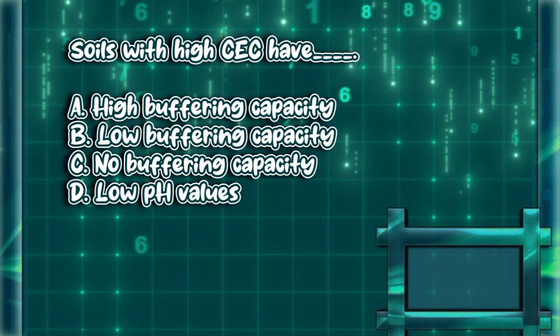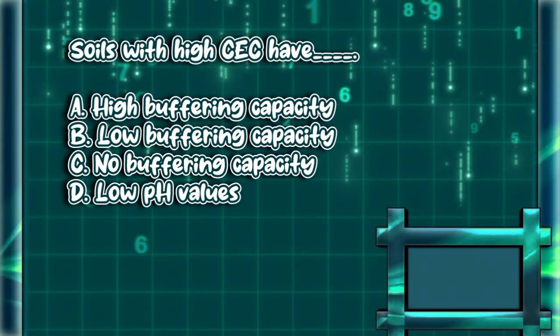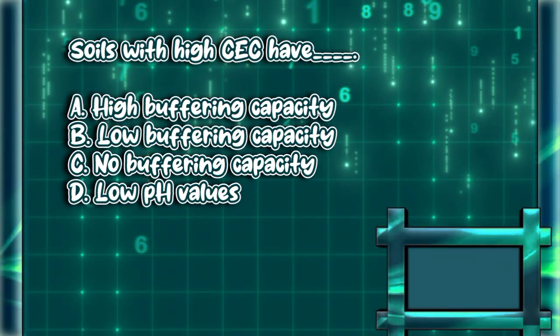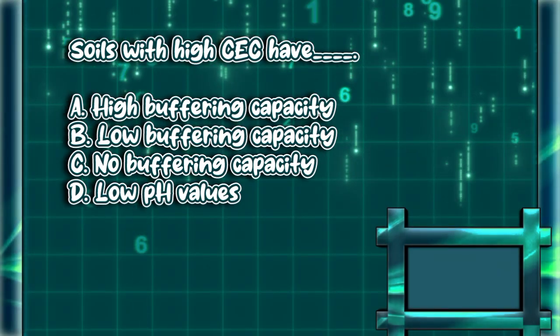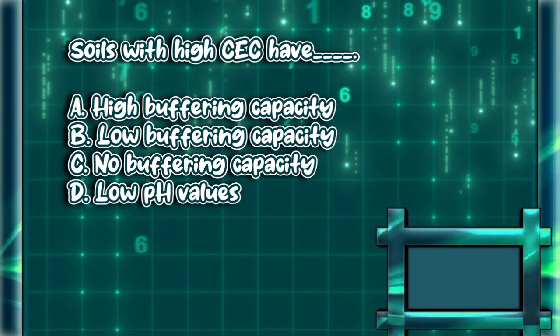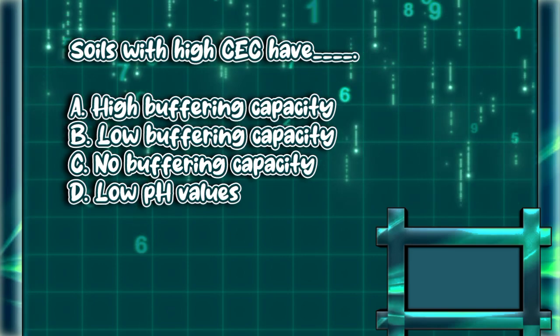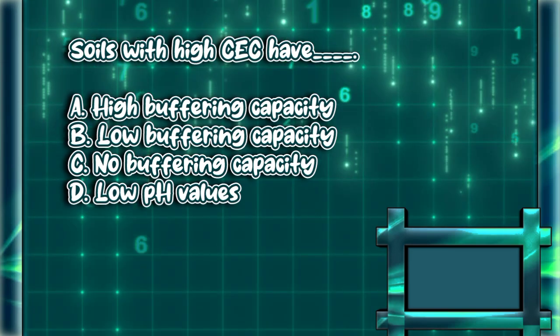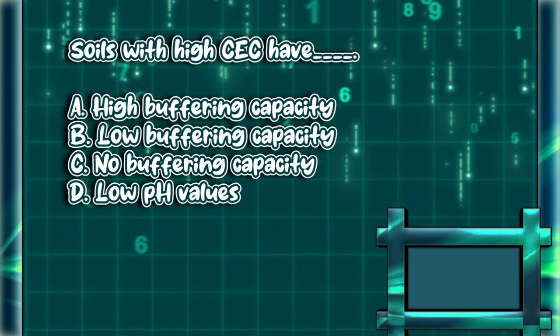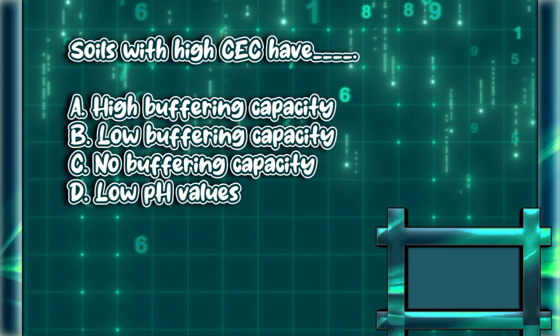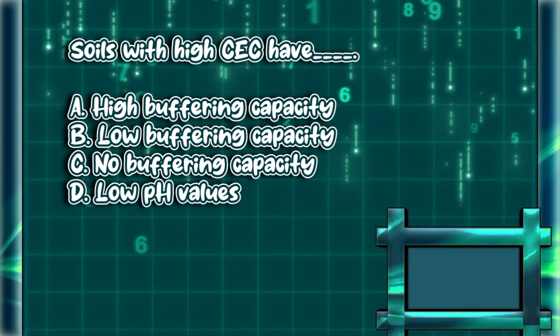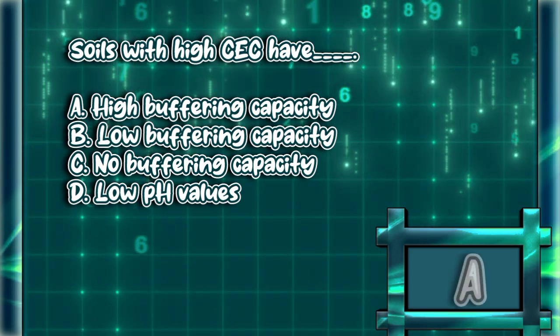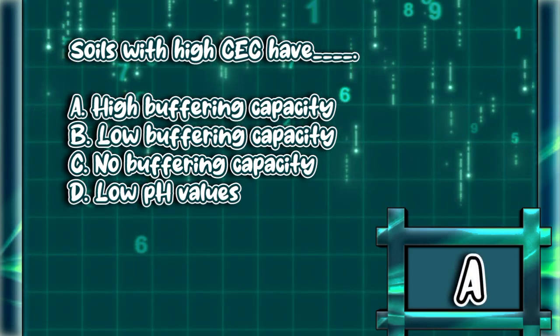Soils with high CEC have: A. High buffering capacity. B. Low buffering capacity. C. No buffering capacity. D. Low pH values. The answer is letter A.